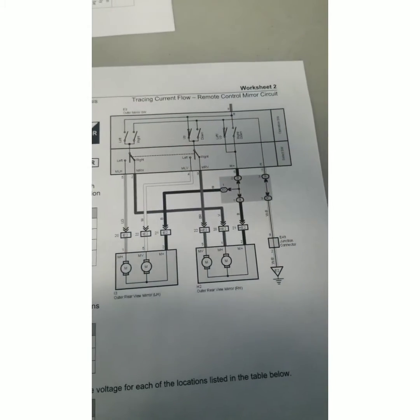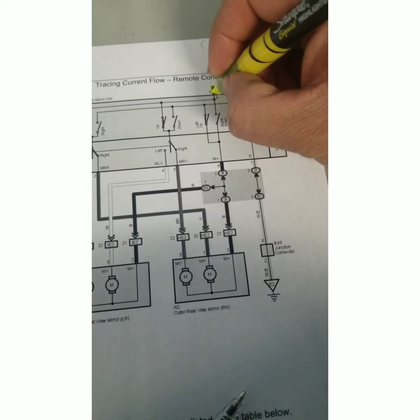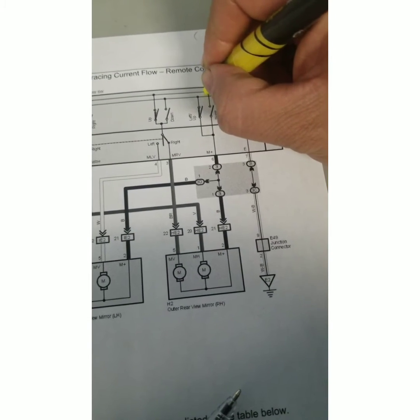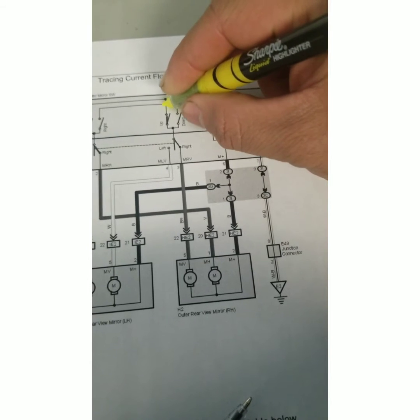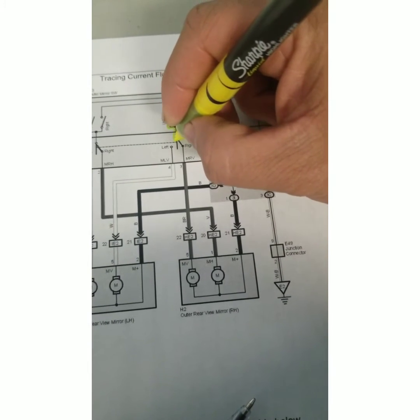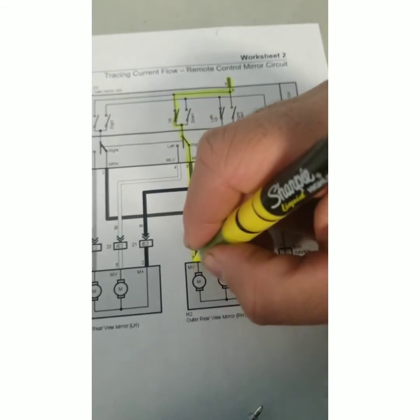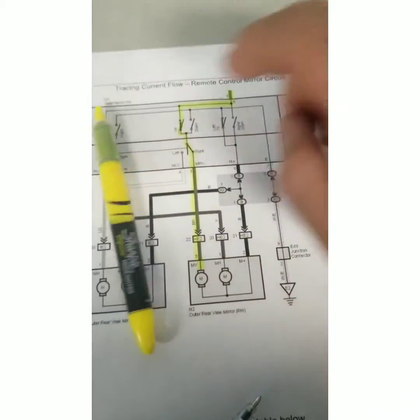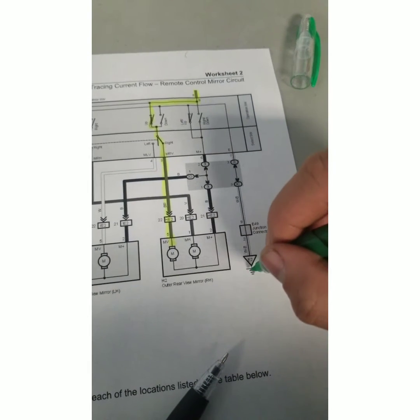Now we're on to tracing. We'll trace the power circuit from here, down through the switch, through this other switch, down to the motor. And then we'll trace our ground from our ground side.